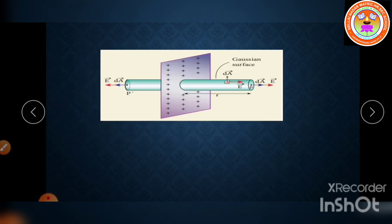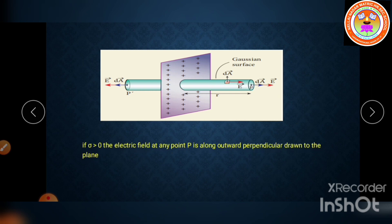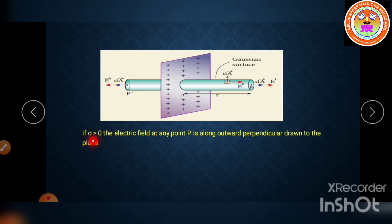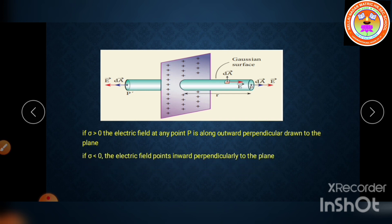When sigma > 0, the electric field points perpendicularly outward from the plane. When sigma < 0, the electric field points perpendicularly inward toward the plane. This formula is valid only in the middle region of the plane and at points far away from both ends. That is all for today's class.